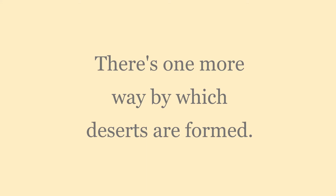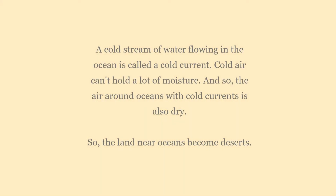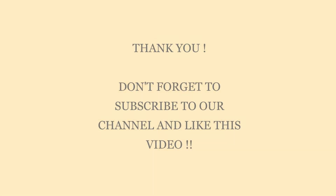There's one more way by which deserts are formed. A cold stream of water flowing in the ocean is called a cold current. Cold air can't hold a lot of moisture, and so the air around oceans with cold currents is also dry. So, the land near those oceans becomes desert. Thank you!